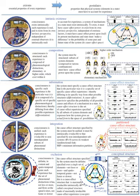Integrated Information Theory attempts to explain what consciousness is and why it might be associated with certain physical systems. Given any such system, the theory predicts whether that system is conscious, to what degree it is conscious, and what particular experience it is having.